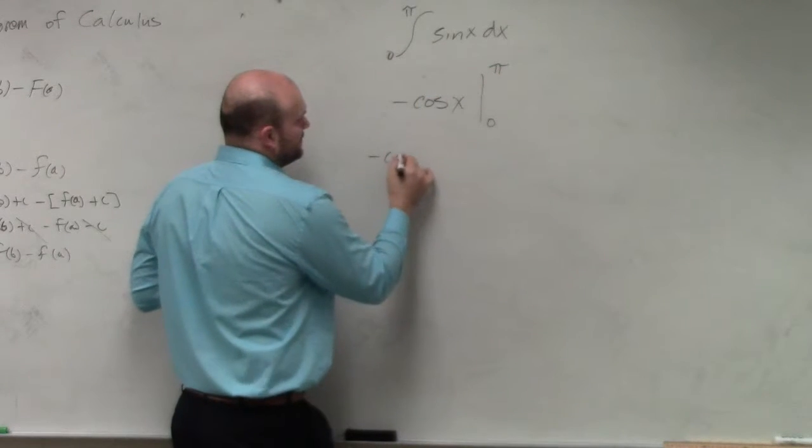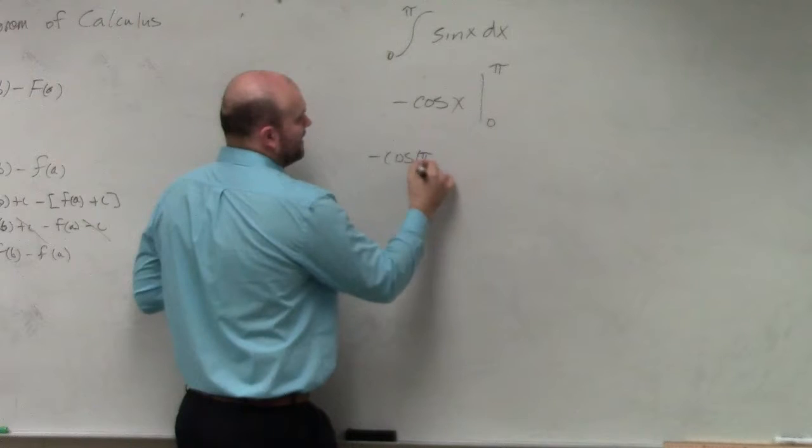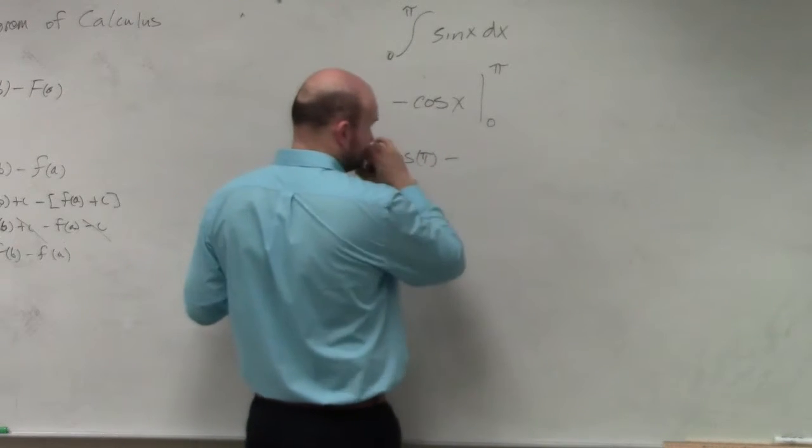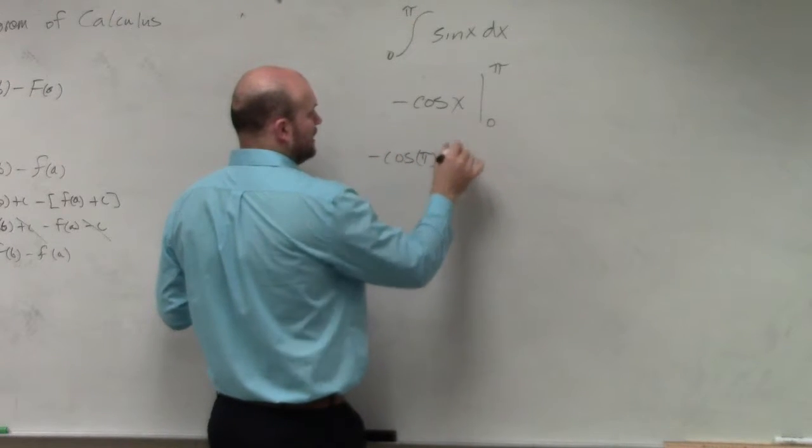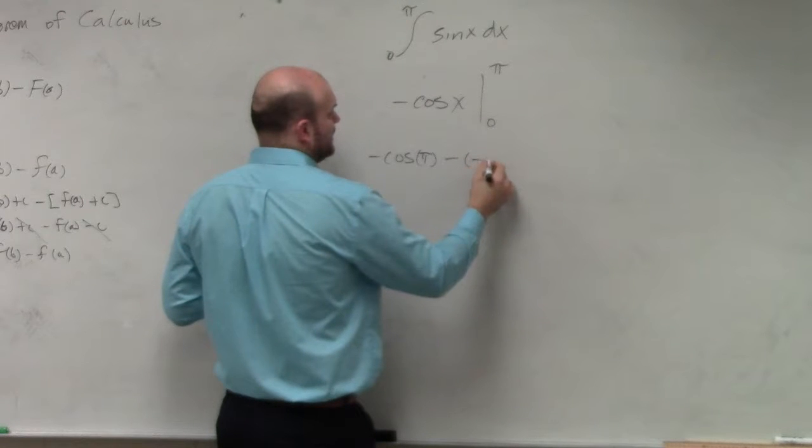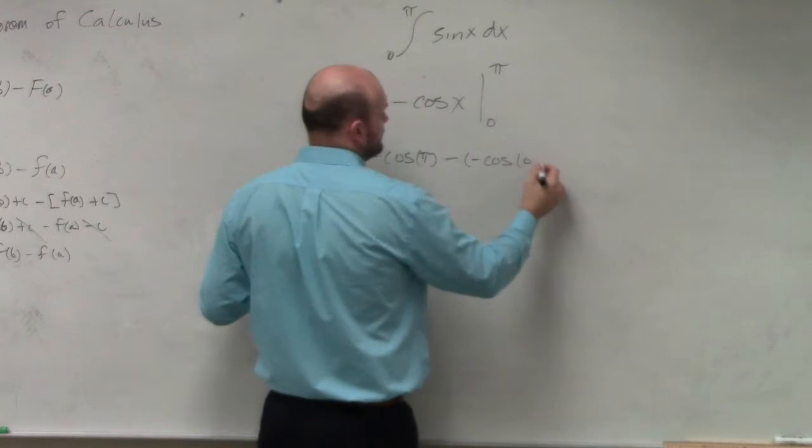So therefore, we have negative cosine of pi minus negative cosine of 0.